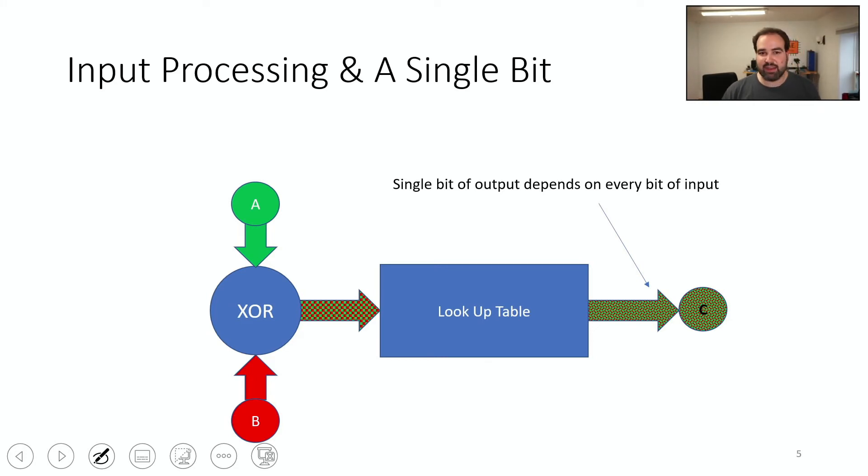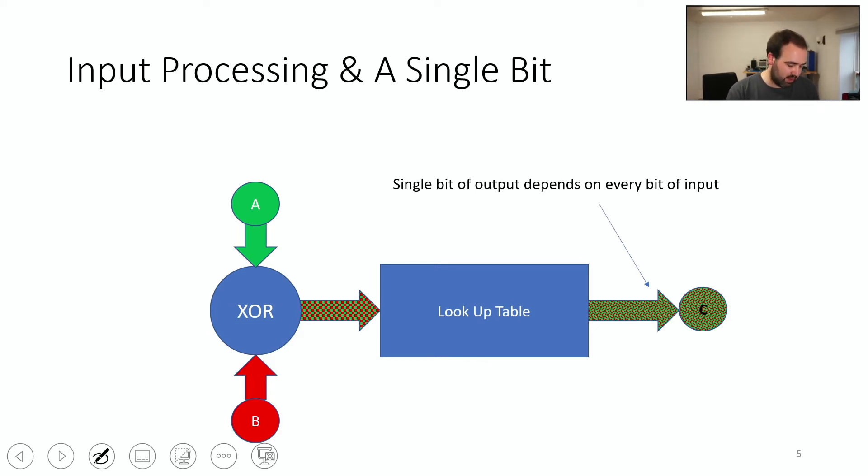So we can play with this. There's a more extensive online lab that you can play with this in. It's part of the ChipWhisper repo that I'll link to in the description here. But basically, you have the input processing that's done like this. So you can see we literally generate a random lookup table, and we just pass it through the lookup table and return the value.